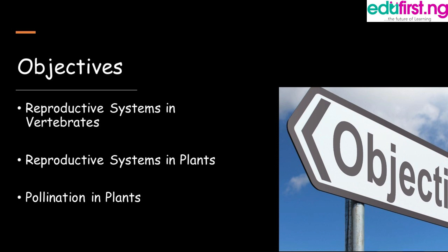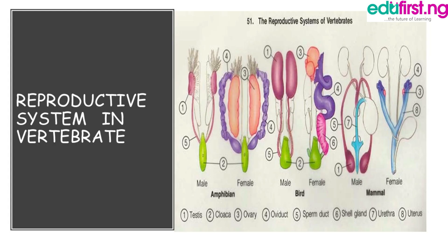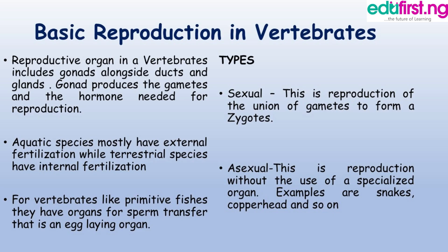Here is a typical example of a reproductive system in invertebrates — of an amphibian, of a bird, and that of a mammal. We're going to consider the basic reproduction in invertebrates, looking at two types: sexual and asexual. Sexual is the reproduction involving the union of gametes to form a zygote, while asexual is reproduction without the use of a specialized organ, such as we have in snakes.